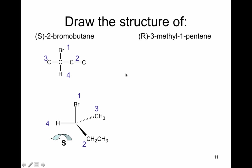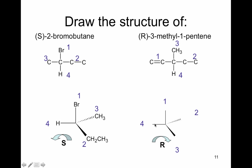Now draw R-3-methyl-1-pentene. Draw the backbone structure and find the chiral carbon at position three. Note that a double-bond carbon is not the same as a single-bond carbon, so there are four different groups. For R configuration, place the lowest priority away, arrange one, two, three clockwise, then fill in the groups to complete the structure of R-3-methyl-1-pentene.